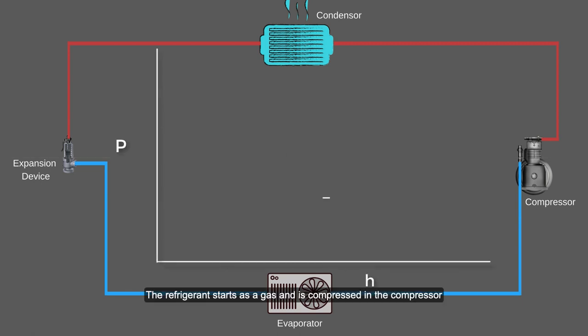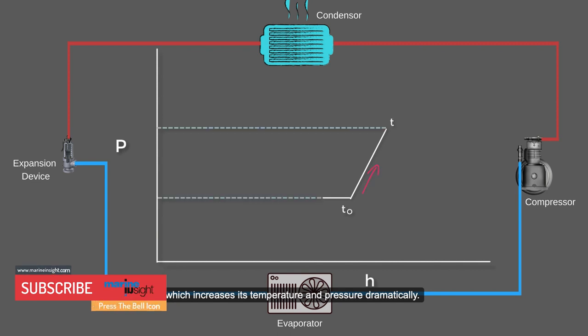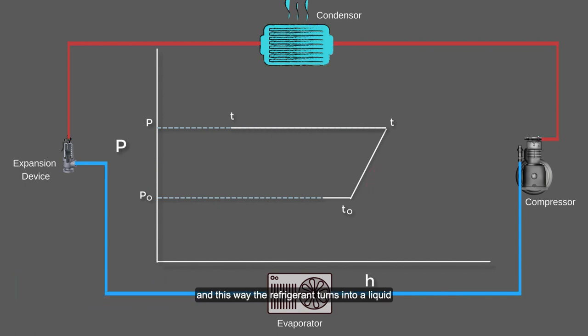The refrigerant starts as a gas and is compressed in the compressor, which increases its temperature and pressure dramatically. Therefore, the condenser cools the hot, high pressure refrigerant and this way the refrigerant turns into a liquid.